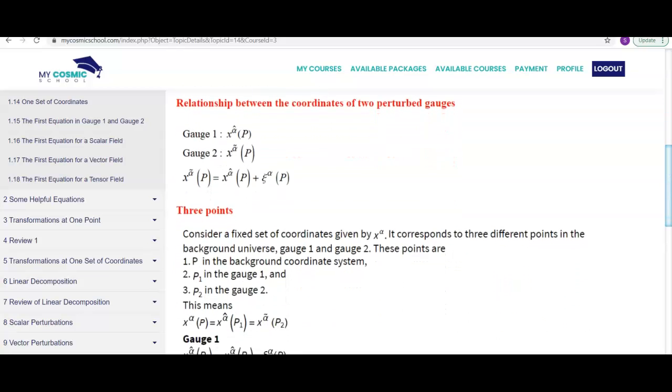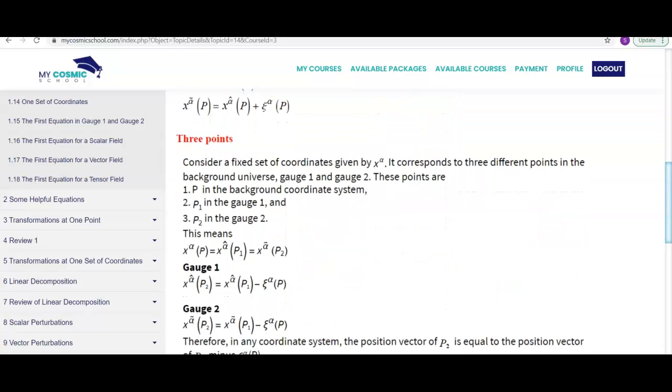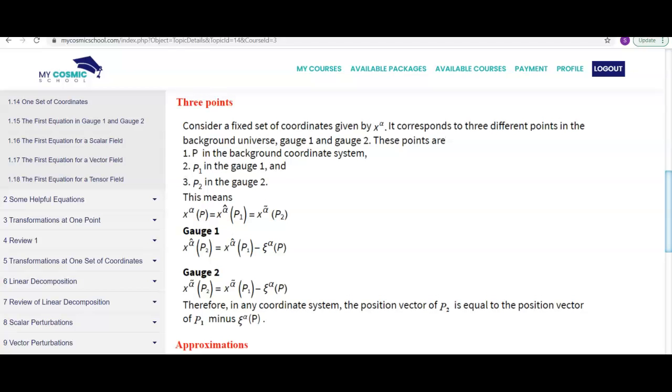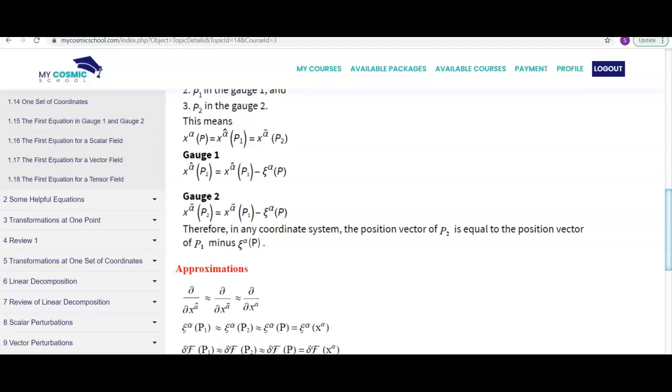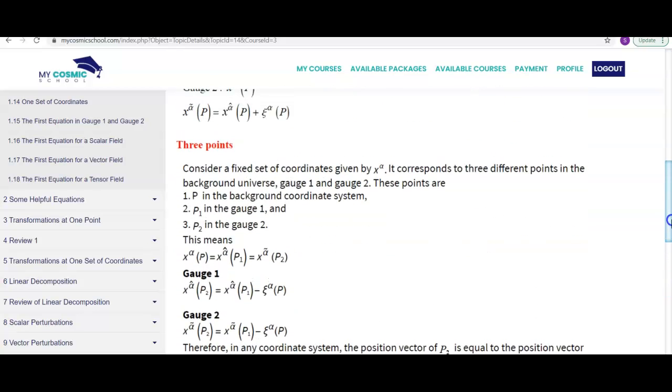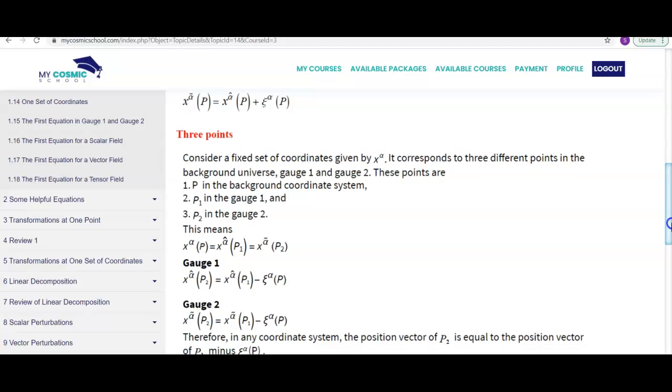And most importantly we looked at the transformations of scalar, vector and tensor fields at one given point. And by the way, scalar fields do not transform at one given point. Scalar field remains the same when we go from one gauge to another gauge at one given point.